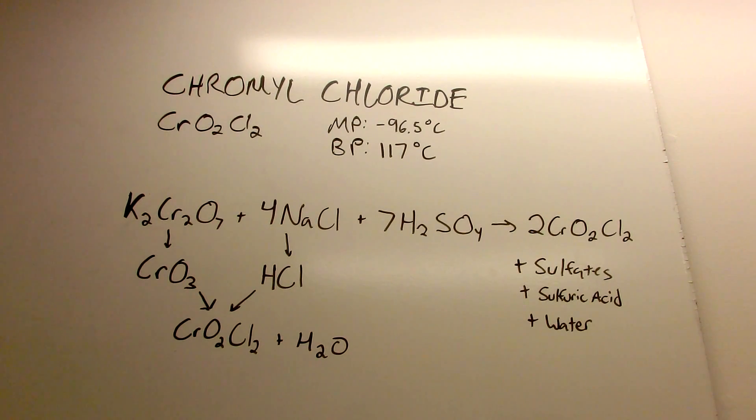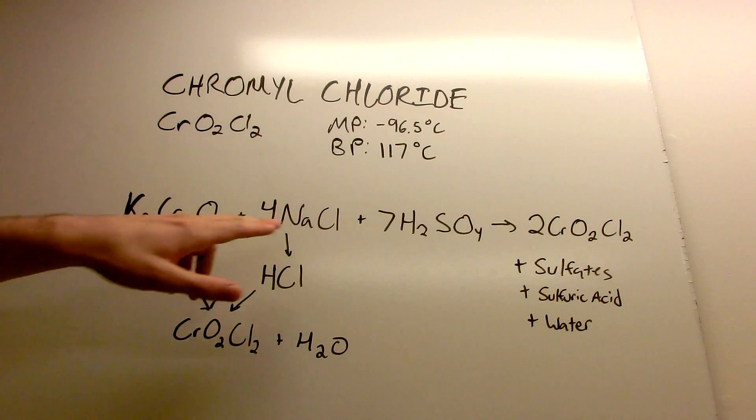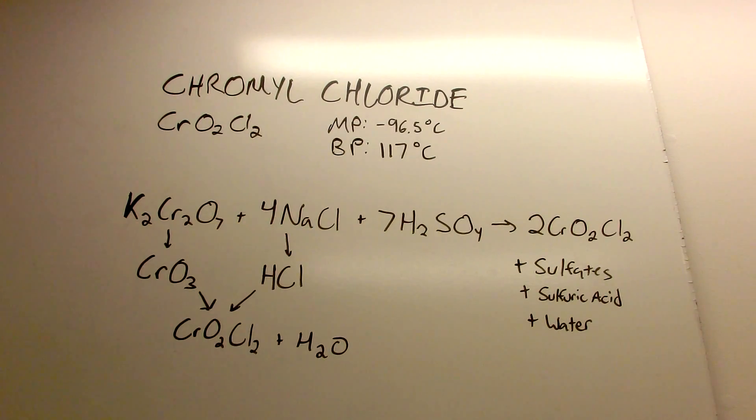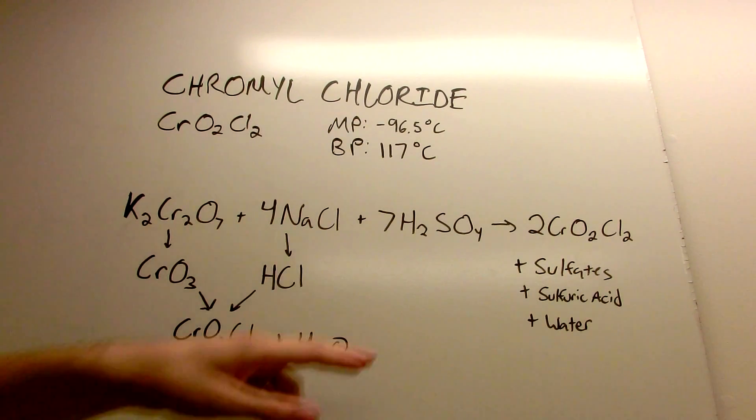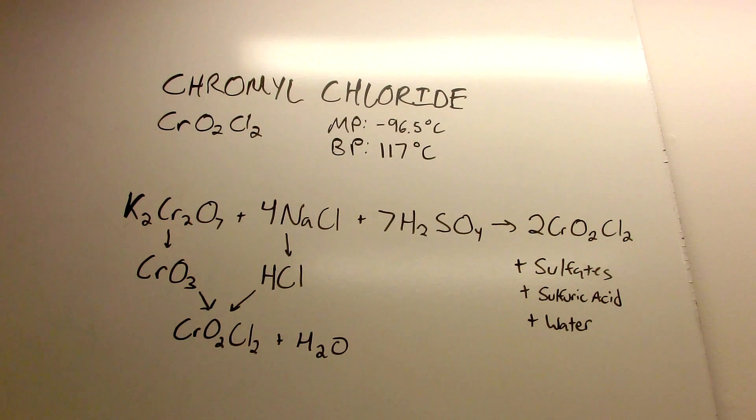Today the chromal chloride is going to be made from potassium dichromate, sodium chloride, and sulfuric acid. That's going to yield our chromal chloride plus some sulfates, excess sulfuric acid, and some water.